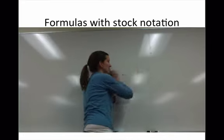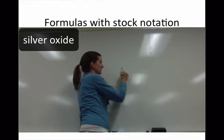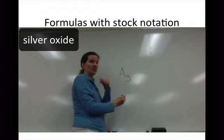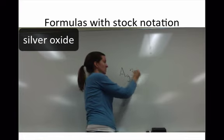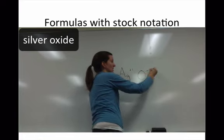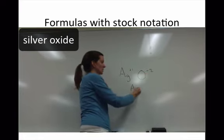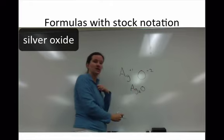I also give you the example silver oxide to remind you that silver is one of our transition metal exceptions. You need to have it memorized. That's a plus 1 charge. Coming together with oxygen that's a minus 2 charge, you need 2 silvers and 1 oxygen.